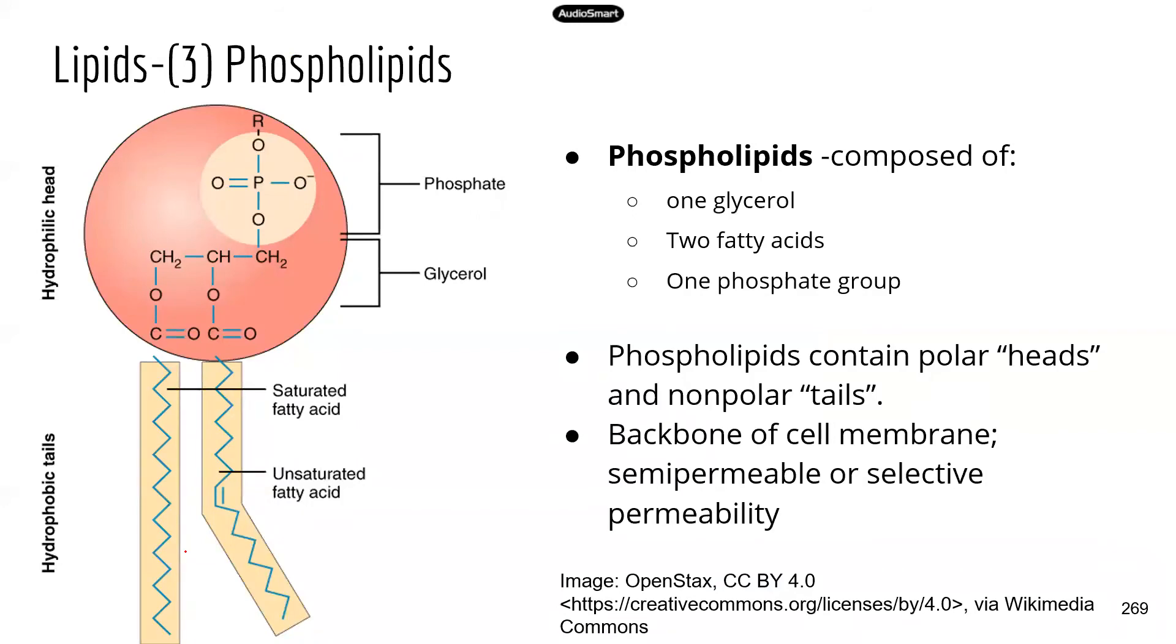The third type of lipid is phospholipids. This is an important group of lipids because they're found in cell membranes, and everybody has a cell membrane, including prokaryotic cells like bacteria.